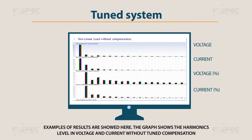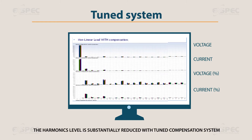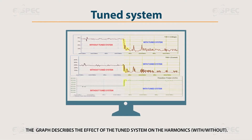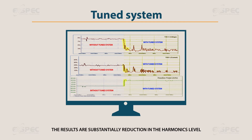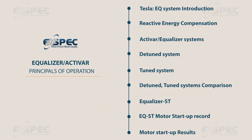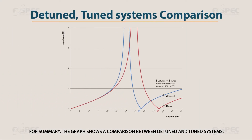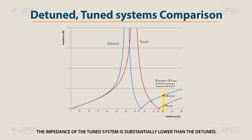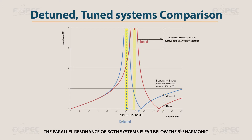Examples of results are shown here. The graph shows the harmonic level in voltage and current without tuned compensation. The harmonic level is substantially reduced with the tuned compensation system. The graph describes the effect of the tuned system on harmonics, with and without — results show substantial reduction in harmonic level. A comparison between detuned and tuned systems shows that the series resonance frequency of the tuned system is at the vicinity of the 5th harmonic at 238 Hz, and 189 Hz for the detuned. The impedance of the tuned system is substantially lower than the detuned, while the parallel resonance of both systems is far below the 5th harmonic.